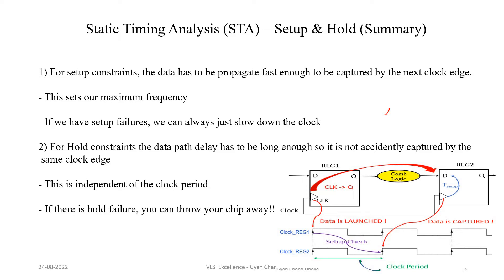The first point is: for setup constraint, the data has to propagate fast enough to be captured by the next clock edge. The data is launched at one clock edge — this is our launch flop and this is our capture flop. The data launched at this clock edge is captured at the next clock edge.